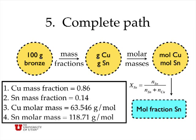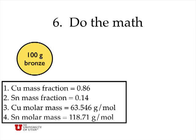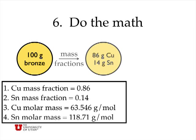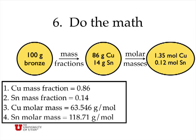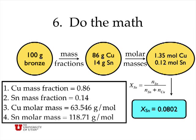So I have a complete path to the solution, and I can start by doing the math. If I assume that I have 100 grams of bronze, then I can calculate that I have 86 grams of copper, 14 grams of tin. Using the molar masses, I know I have 1.35 moles of copper and 0.12 moles of tin. And using my formula here, I can calculate that the mole fraction of tin is 0.0802.